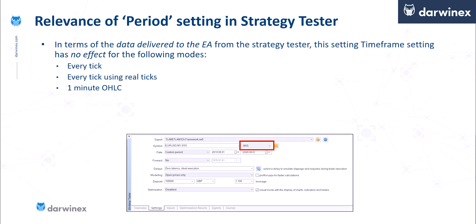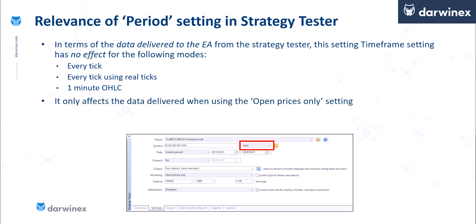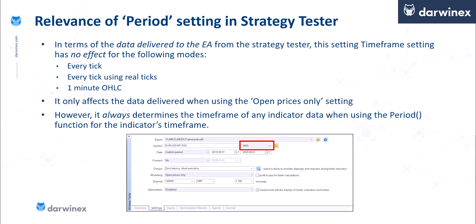Before we move on, it's worth looking at the chart period setting in the MT5 Strategy Tester and its implications for different price data modeling. Firstly, this value has absolutely no impact on the ticks delivered to the expert advisor when using these three settings: Every Tick, Every Tick Using Real Ticks, and One Minute OHLC. This setting only impacts ticks delivered when using the Open Prices setting. However, if you use the Period function within your EA code, that will determine the time frame used for indicator data and other processing, regardless of the price model used.